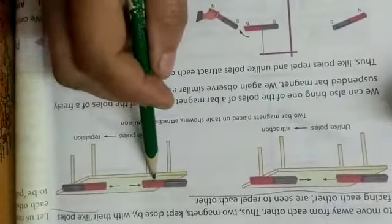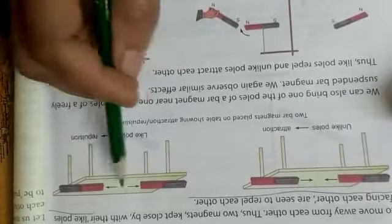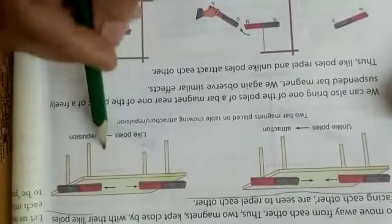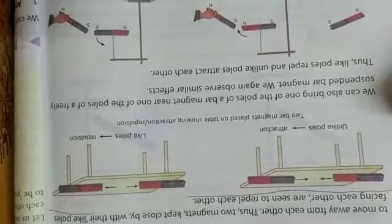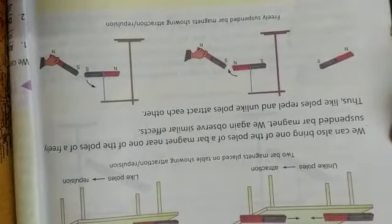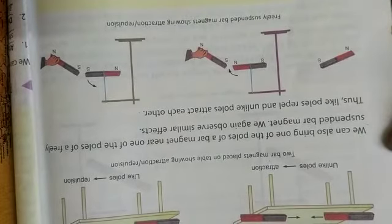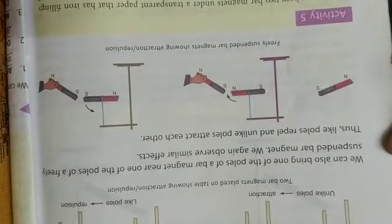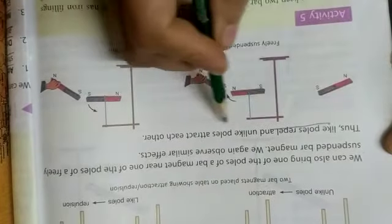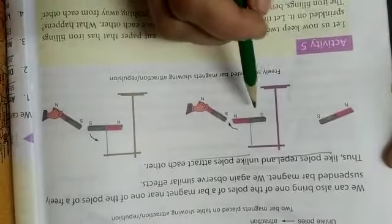We can also bring one of the poles of a bar magnet near one of the poles of a freely suspended bar magnet. We again observe similar effects. Thus, like poles repel each other and unlike poles attract each other. This is shown with a freely suspended magnet having a north pole and a south pole.